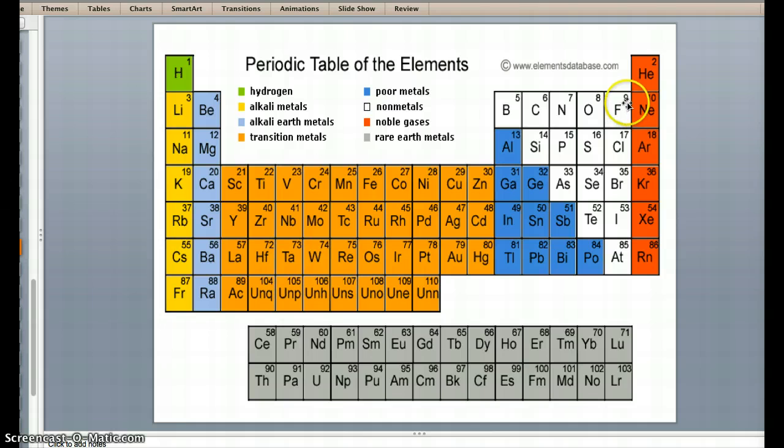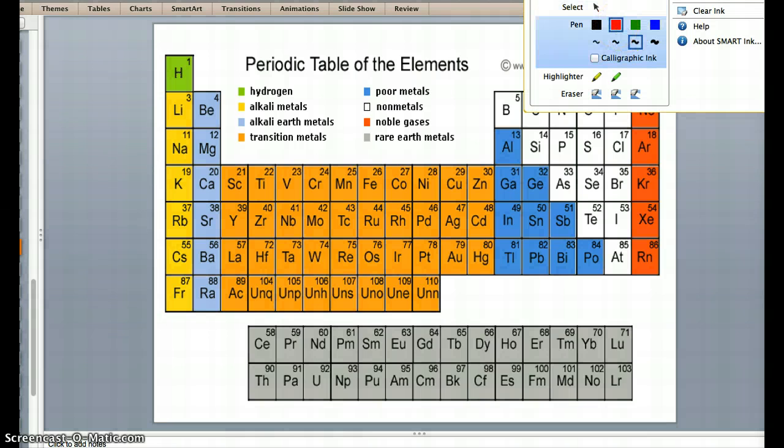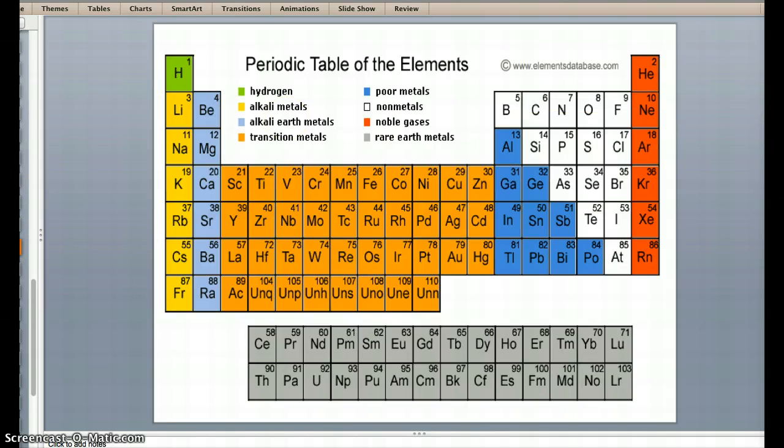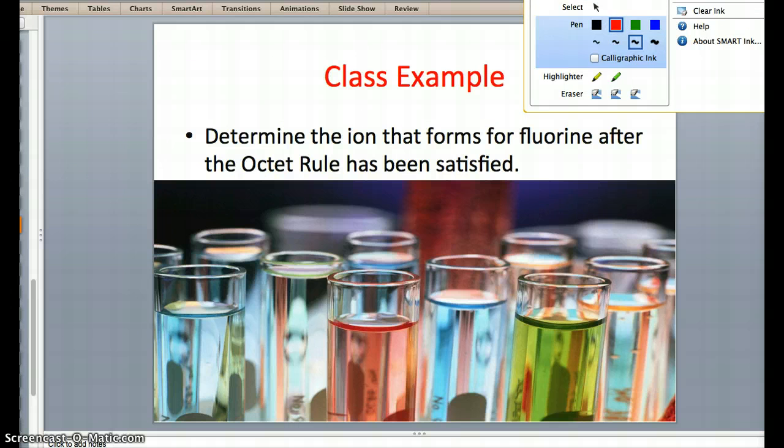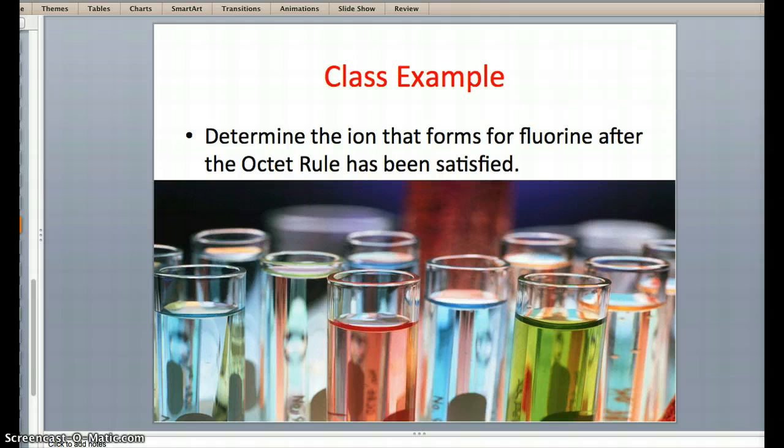Fluorine has an atomic number of 9, indicating that it has 9 protons, and in its neutral state 9 electrons as well. So, let's draw fluorine for some reference and start to draw our Bohr diagram.